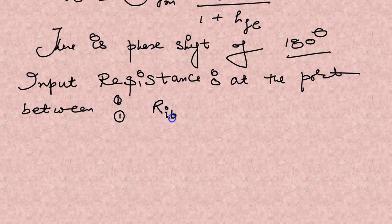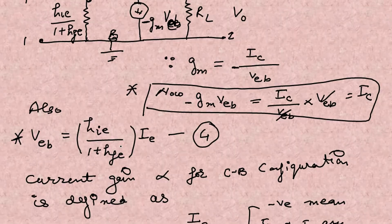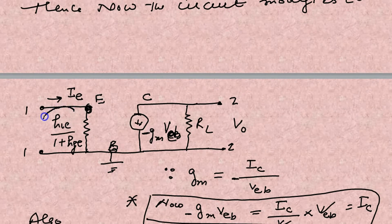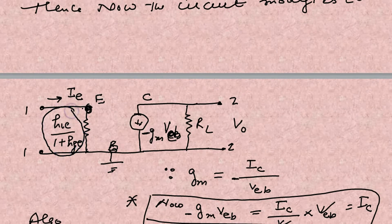Now let's find the input resistance with the port 1-1, between 1-1 that is called RIB input resistance, and figure it is showing the input resistance HIE upon 1 plus HFE.